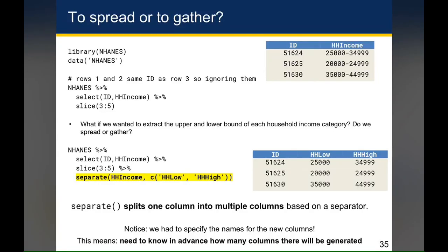One of the tenets of tidy data was that each cell should contain one value. If you look at the NHANES data from the NHANES package, you'll notice this variable HHIncome, which has a range of household income for each given individual.